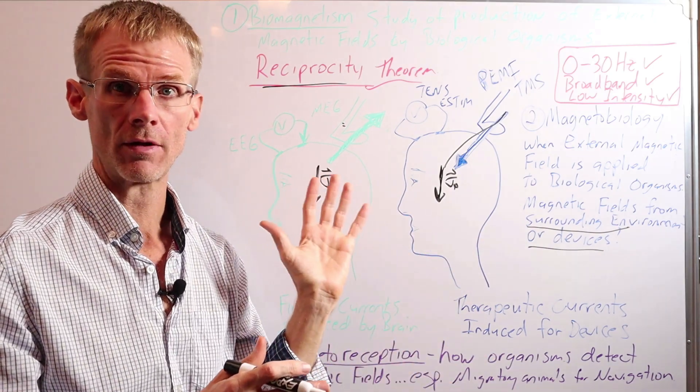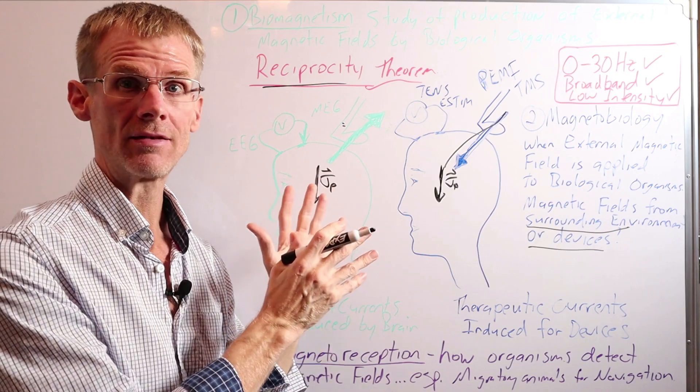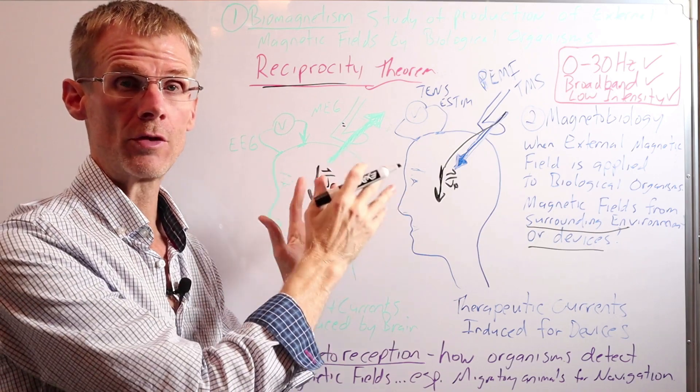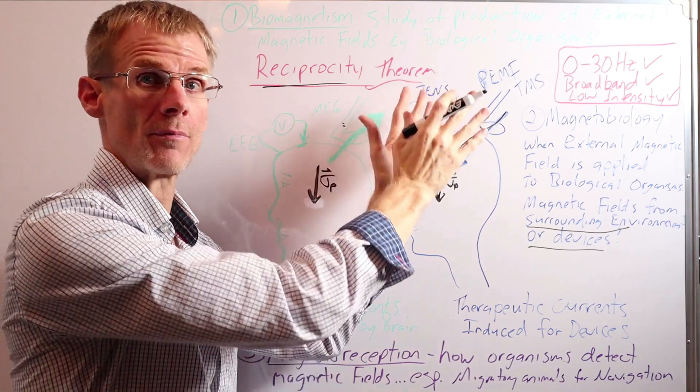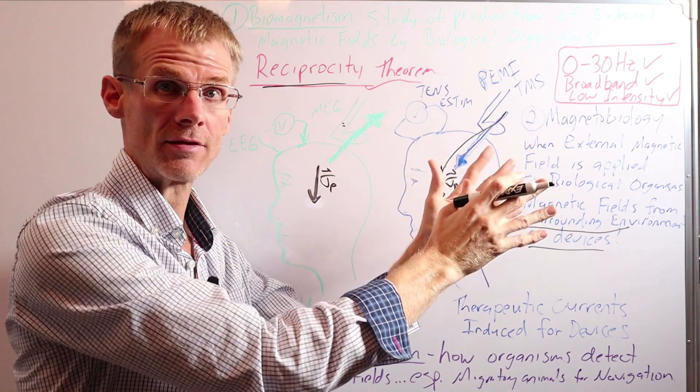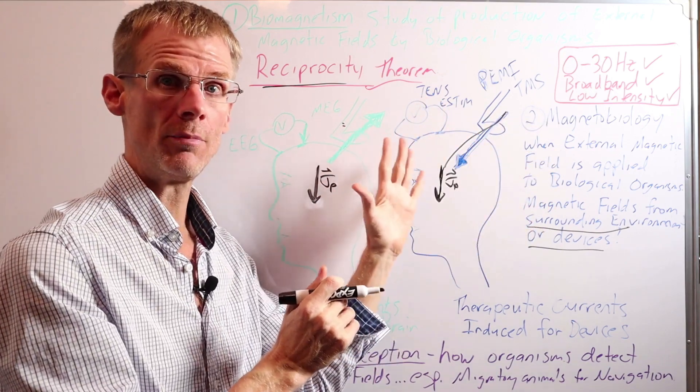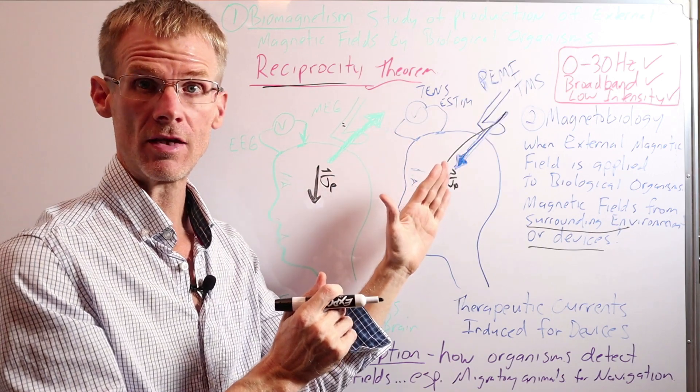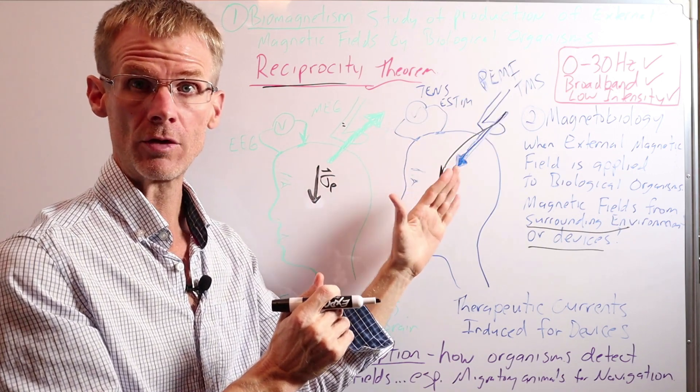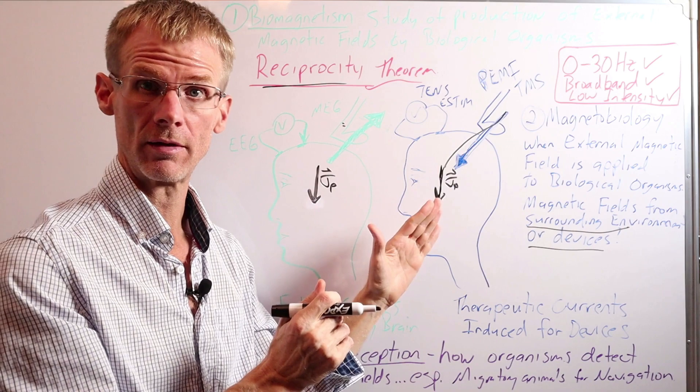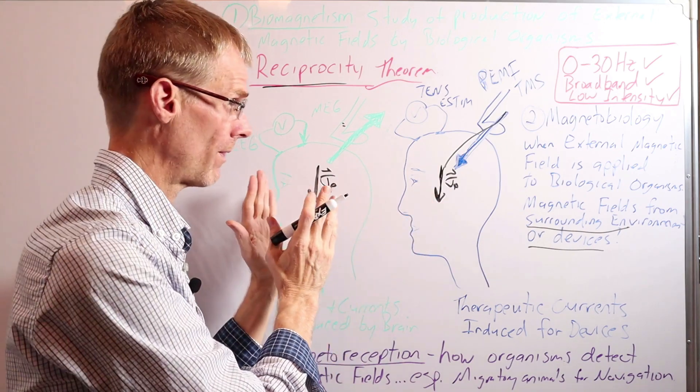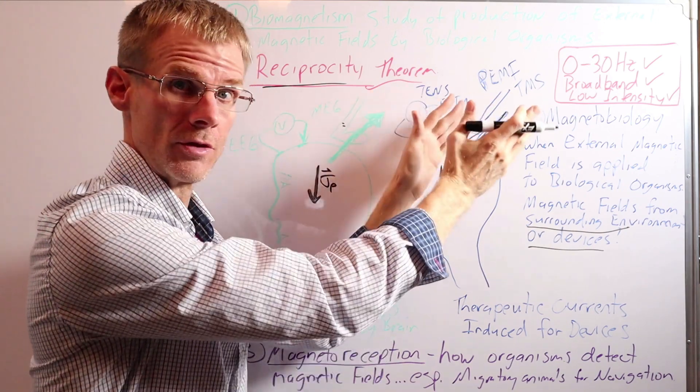So by the reciprocity theorem, we can use biomagnetism to determine the frequencies and energies that are emitted from the body, like a transmitting antenna. And then we can use magnetobiology to apply the same type of healing frequencies and energies to the body. So again, the frequencies something emits is the frequencies it absorbs.